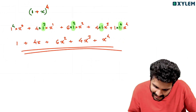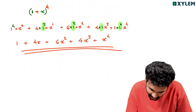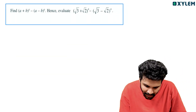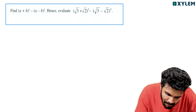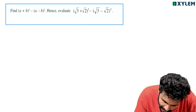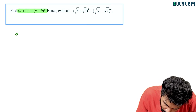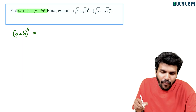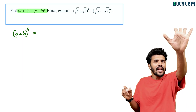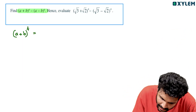Next question: we are going to find (a plus b) whole raised to 4 minus (a minus b) whole raised to 4. For (a plus b) whole raised to 4, the index is 4, and the coefficients are 1, 4, 6, 4, 1.